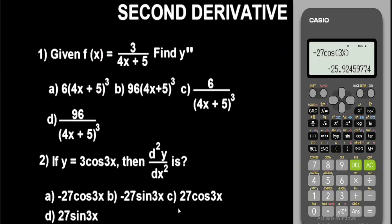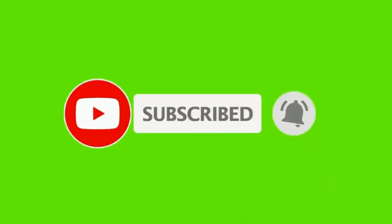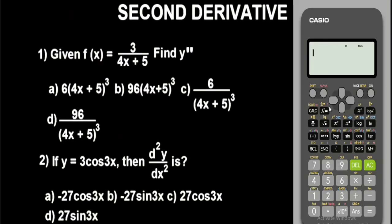This is basically how you can solve problems involving the second derivative using the Casio fx-991 ES Plus second edition scientific calculator in seconds, fast, for multiple choice questions. If you're new to this channel, hit subscribe for more videos like this. Like, share, and comment. Leave any questions in the comment section below and I'll respond. Don't forget to reset the calculator when done: press shift 9, press 3, press equals, press equals again. Click on the end screen above — see you in the next video, thanks for watching.